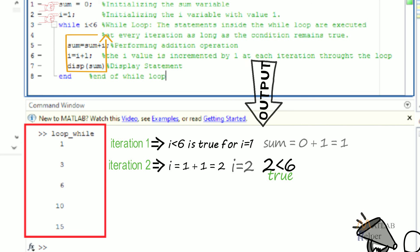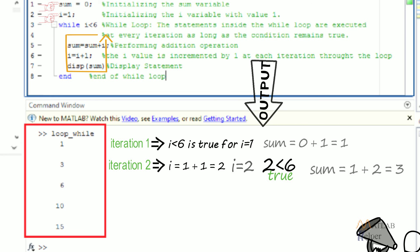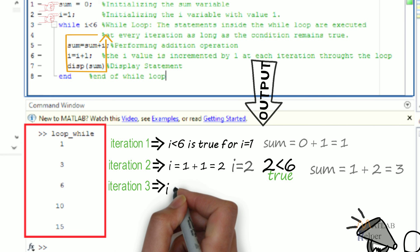Hence again the statements would be executed, that is sum=1+2=3. And i will be i=i+1, that is equal to 2+1=3.